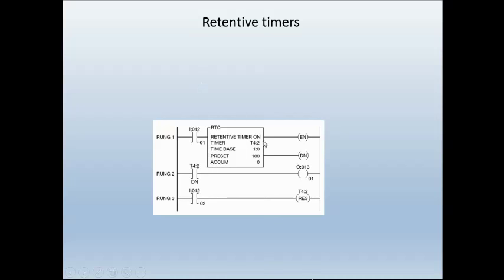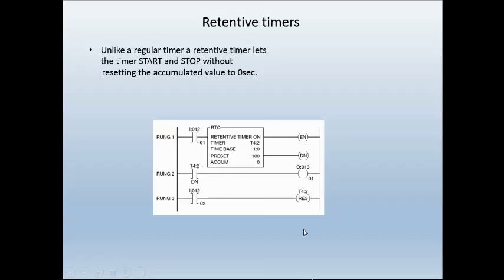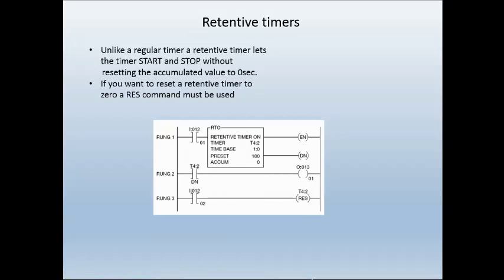We do have the option of retentive timers — they're an RTO instruction. These timers do not reset when the logic in front of them has been removed. They're very similar to the other timers, except the accumulated value will not go back to zero if the logic in front is false. The only way to reset the RTO timers is to use the reset command. So if the reset contact becomes true, it will reset that timer — T4:2 is the timer address — and set the accumulated value back to zero. And that's about all I have for timers for you.